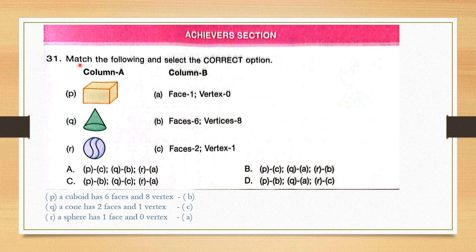Question number 31. Match the following and select the correct option. A cuboid has 6 faces and 8 vertices, so P is related to B. A cone has 2 faces and 1 vertex, so it is related to C. A sphere has only 1 face and there is no vertex, so it is related to A. The correct answer is option C.